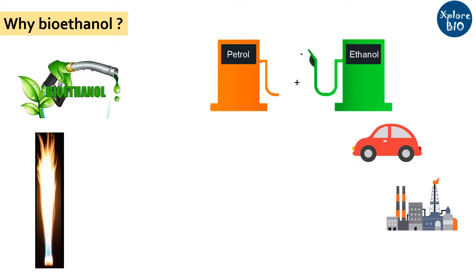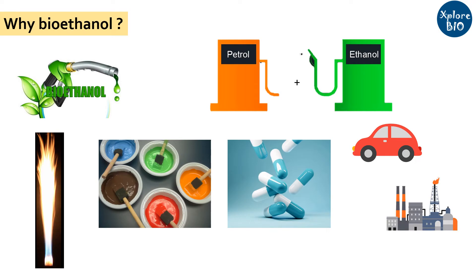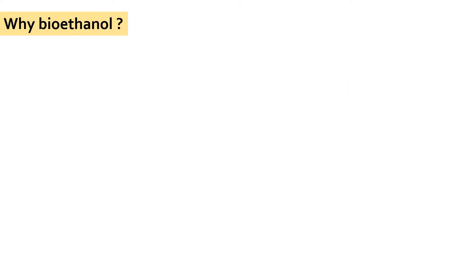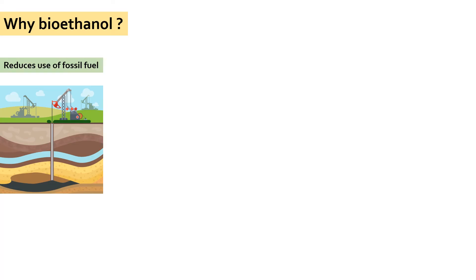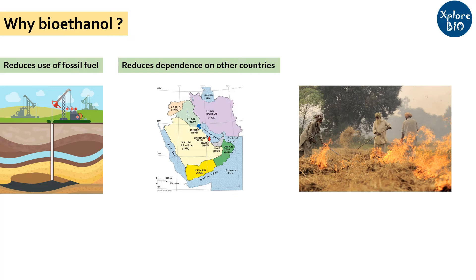Bioethanol can also be used in paint industries, developing drugs, and others. On one hand, it reduces the utilization of crude oil or fossil fuels. On the other hand, bioethanol produced indigenously will reduce dependence on other countries. It can also minimize the incidences of agricultural waste burning — rather, the waste can be utilized to produce more valuable products.